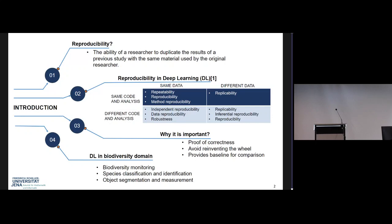Why is it important? It is important because of the proof of correctness. If two or more authors are able to get the same result, then it provides some proof of correctness. It also avoids reinventing the wheel — instead of redoing work from the past, one could focus on future prospects. It also provides a baseline for comparison, so you could verify if your result has better performance than past work. Deep learning has various applications in the biodiversity domain, whether it's biodiversity monitoring, species classification and identification, and so on. Therefore, it is important that every experiment done with deep learning methods should be reproducible.